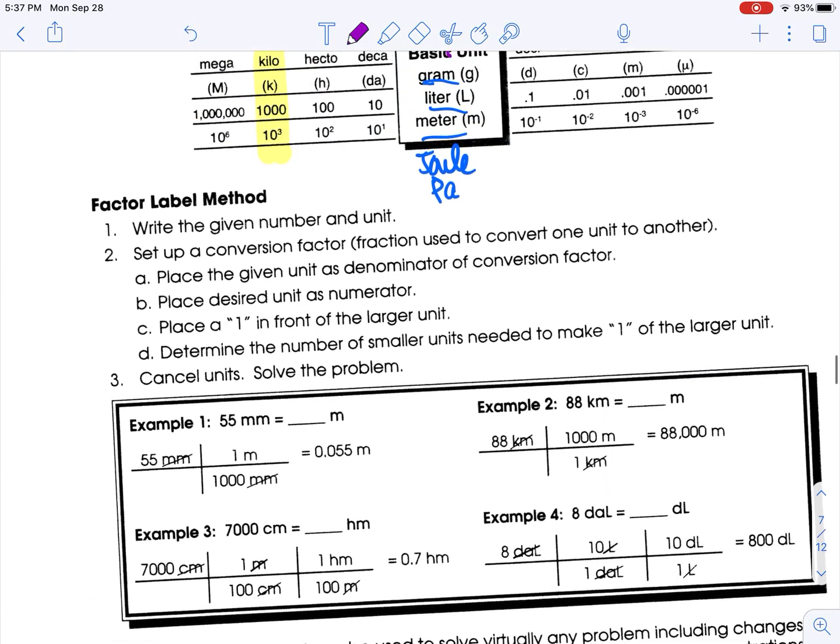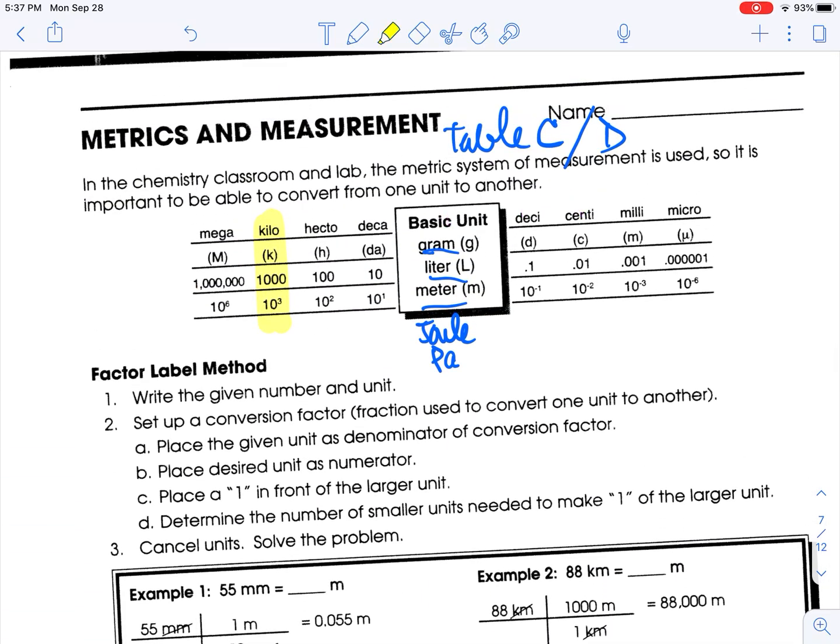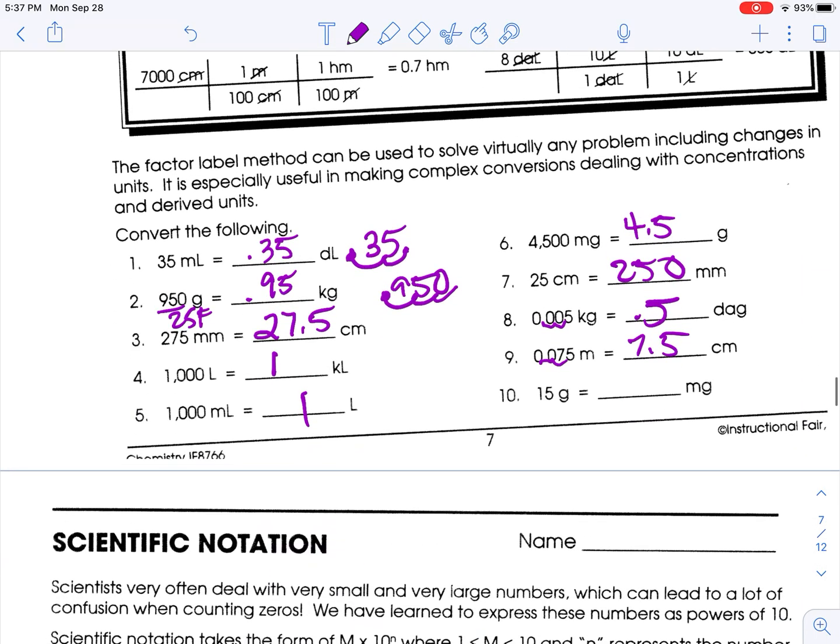And grams to milligrams. Grams. One, two, three spots to the right. So one, two, three. You have to add eggs to the egg carton. So that's 15,000.